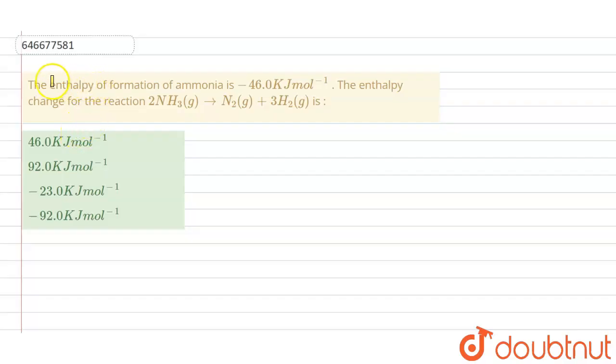The question is asking: the enthalpy of formation of ammonia is given as minus 46 kilojoule per mole. The enthalpy change for the reaction is given. First of all, what is